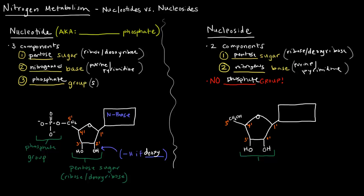We still have a nitrogenous base attached to the one prime carbon of the pentose sugar, and we still have the pentose sugar, which can be ribose or deoxyribose. But at the five prime end, we no longer have a phosphate — we just have a CH2OH, as though the sugar has not been modified at the five prime carbon.